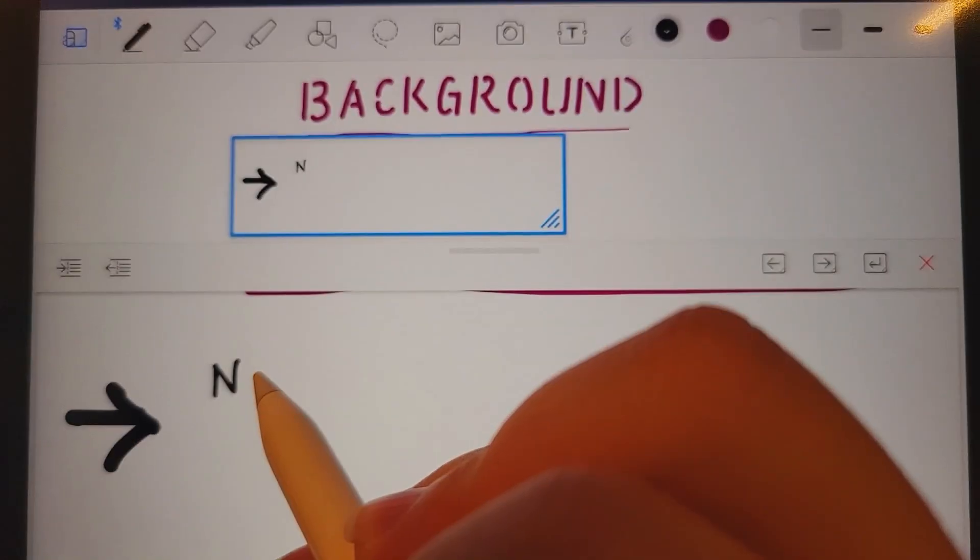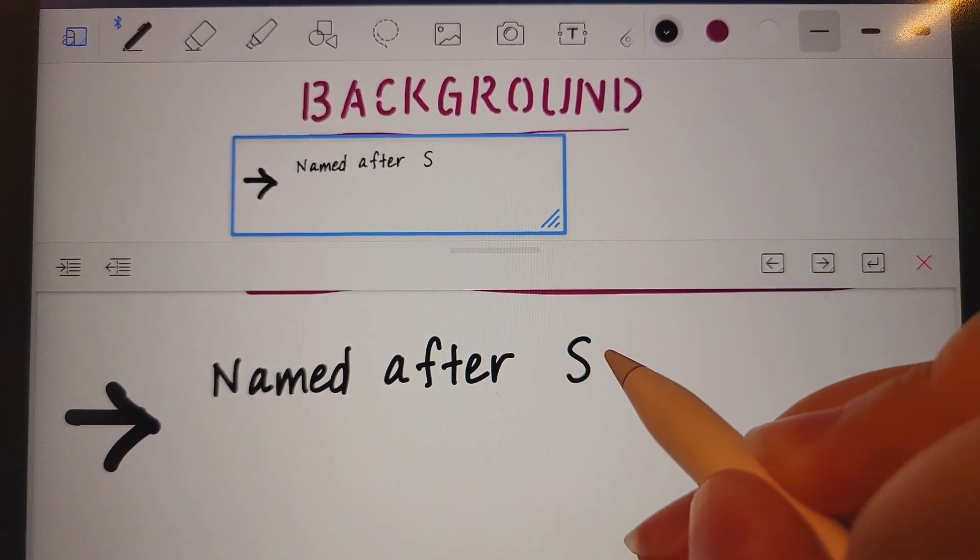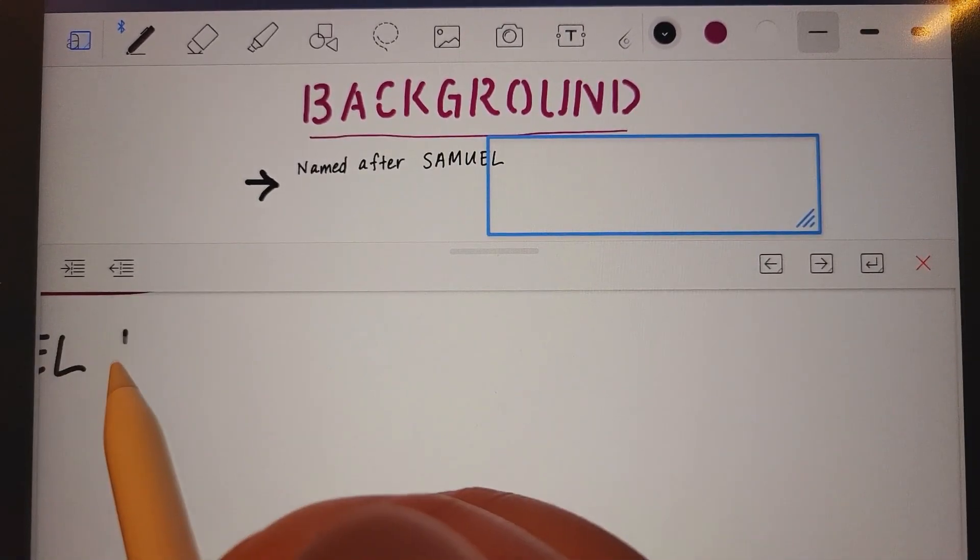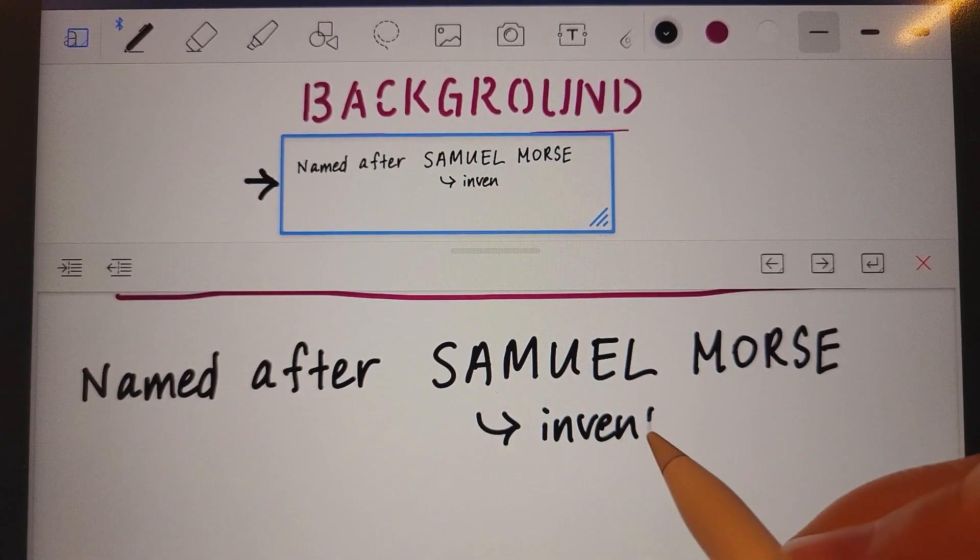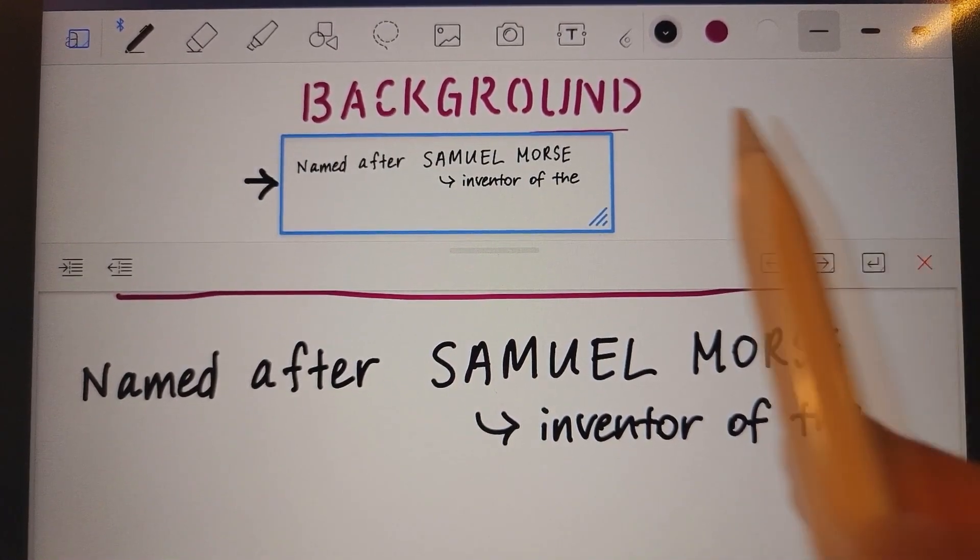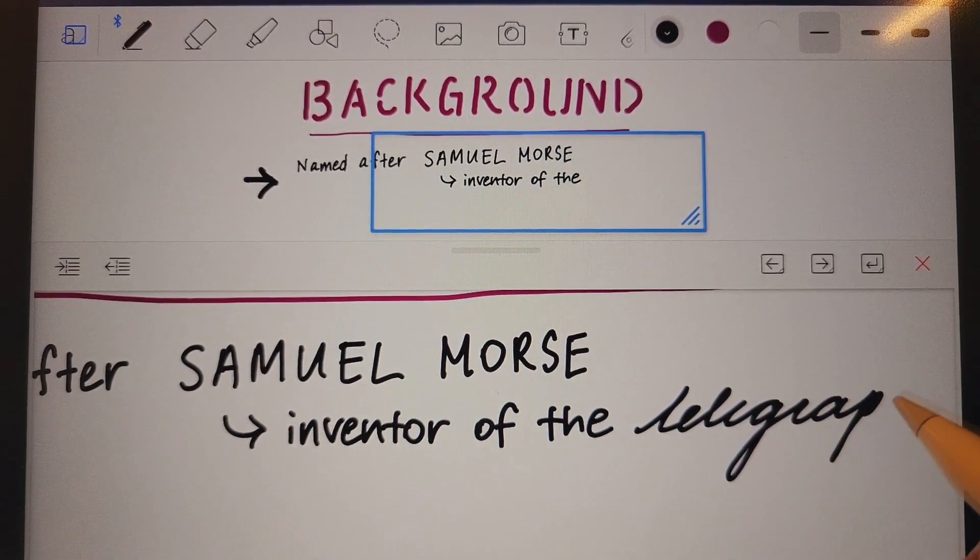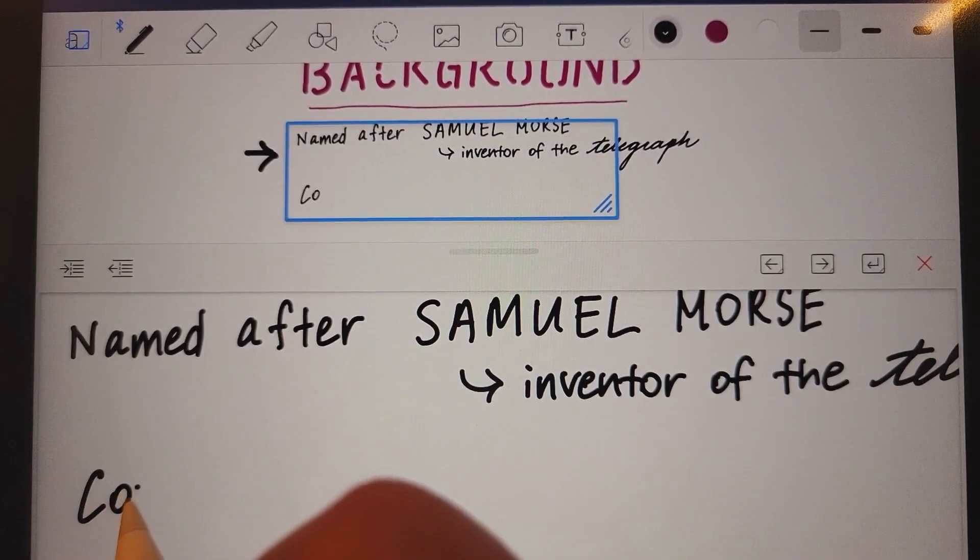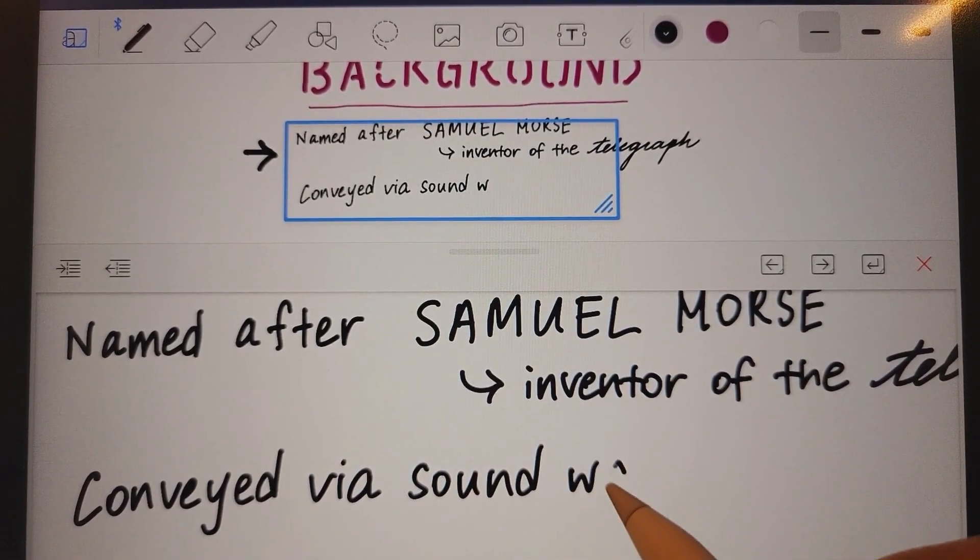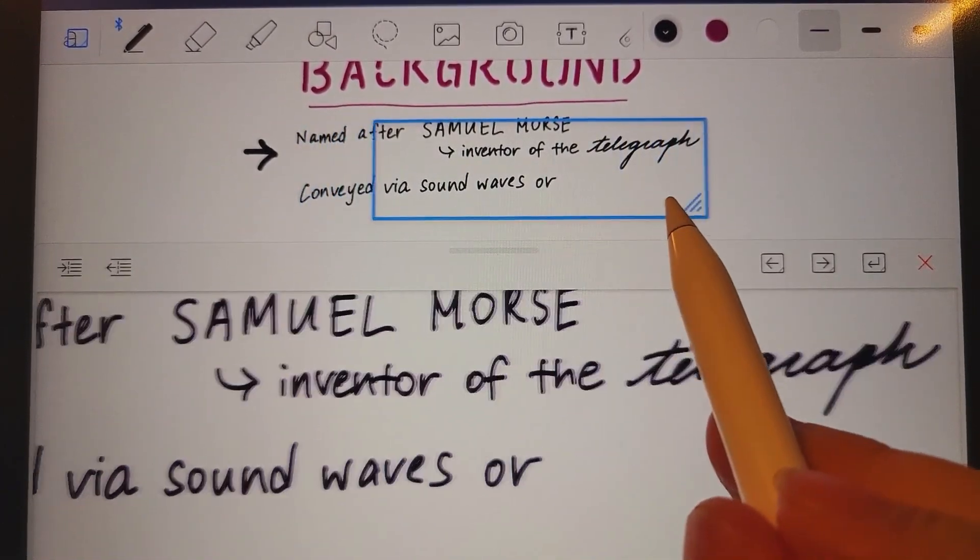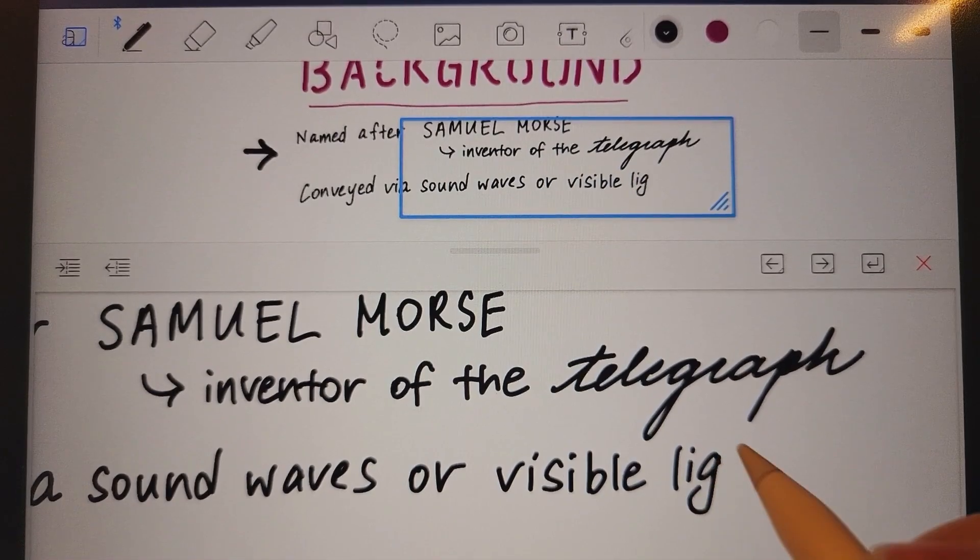Firstly, named after Samuel Morse. Inventor of the telegraph.